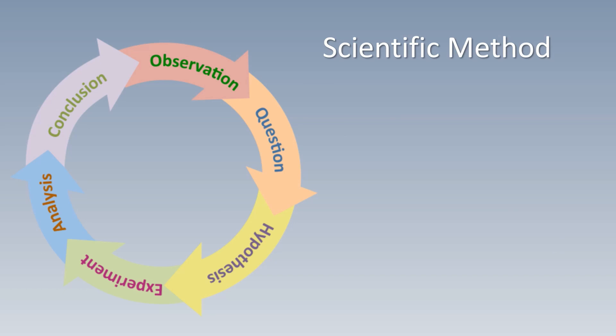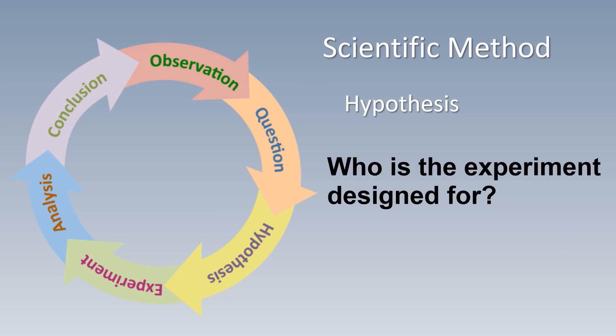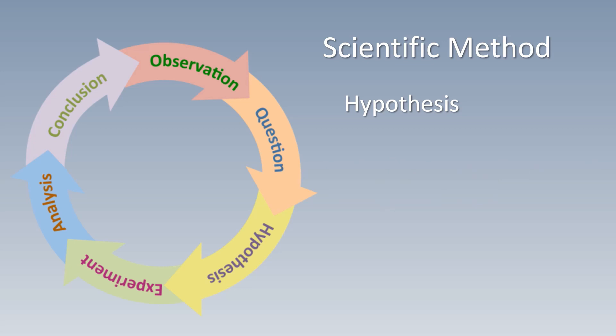A key part of the scientific method is developing your hypothesis. We also need to think about who our experiment is designed to help — who is the experiment designed for? For this video, I want to look at whether or not using videos in college classes is more effective at helping students do better academically. The hypothesis is one sentence long, in an if-then format, and it must be falsifiable — meaning it has the ability to be proven wrong.